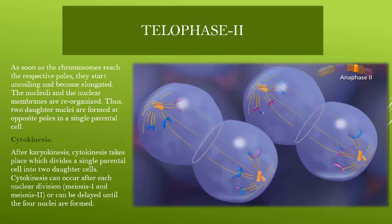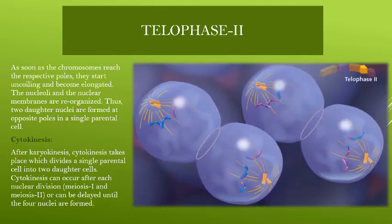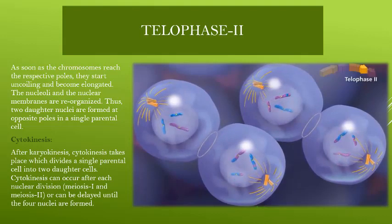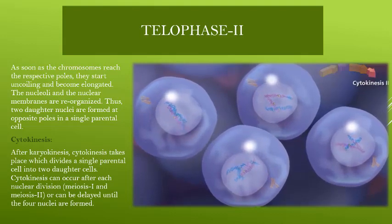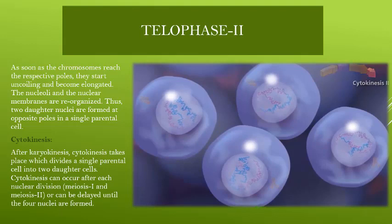In Telophase II, the chromosomes reach the poles, their elongation and uncoiling starts, the nuclear membrane and nucleus reappear, and after nuclear division the cytoplasm also divides through cytokinesis. The result of Meiosis II is that the two daughter cells from Meiosis I each divide again, producing daughter cells that still have a haploid number of chromosomes. In total, four haploid cells are produced.